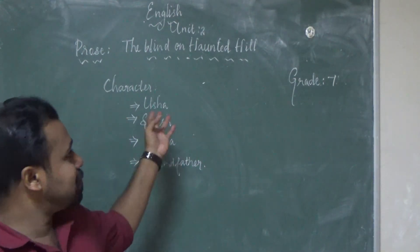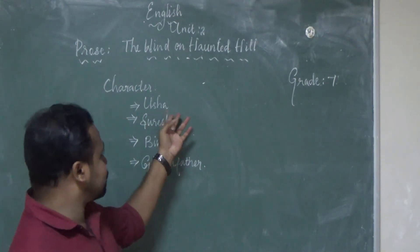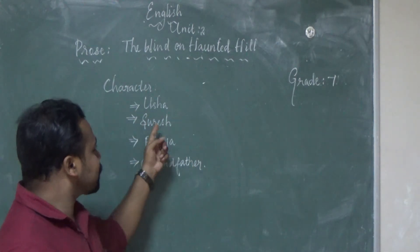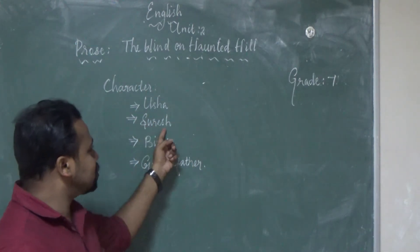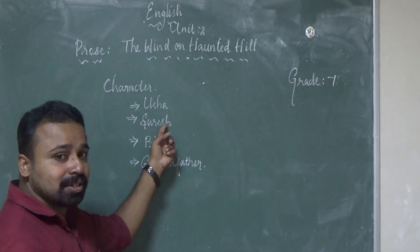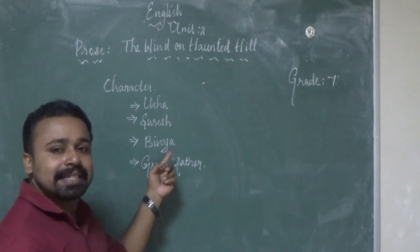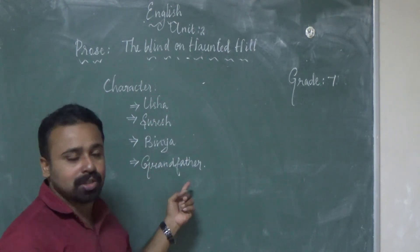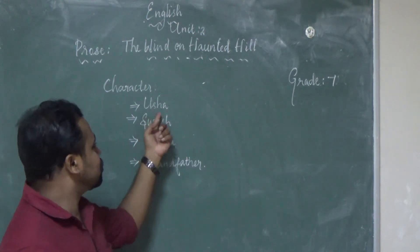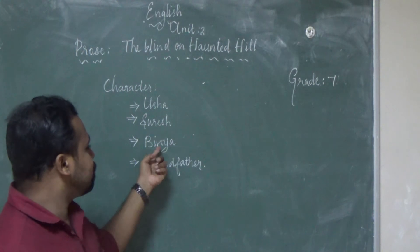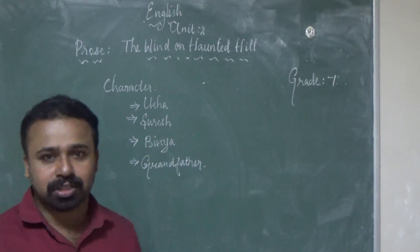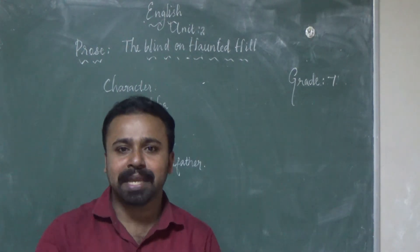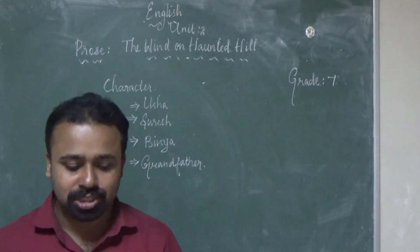First I will note some of the characters here. First character: Usha. Suresh is the younger brother of Usha. Then Binya is the neighbor girl, and grandfather. These are the main characters mentioned here.